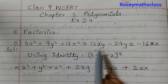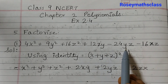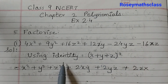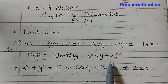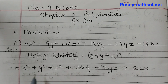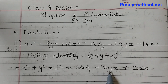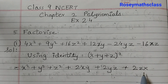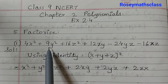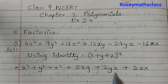This is the expanded form given and we need to find the factors of this polynomial. For this we will use the identity: (x + y + z)² = x² + y² + z² + 2xy + 2yz + 2zx. The given polynomial matches with this expanded form of the identity.